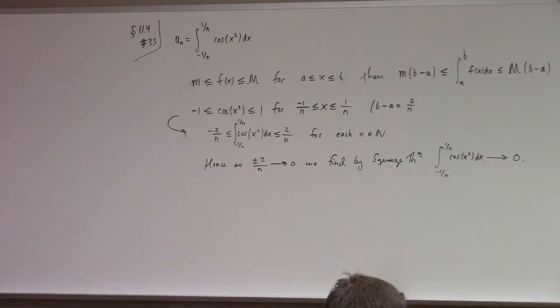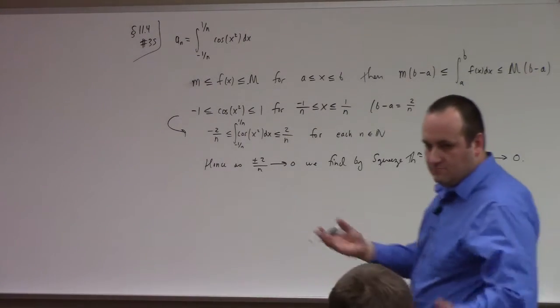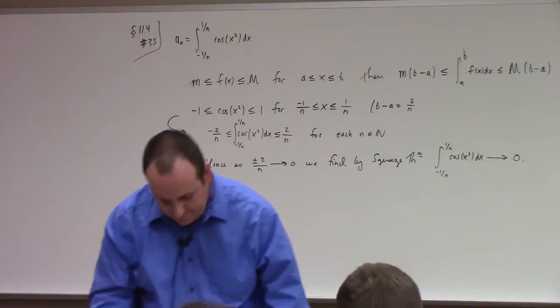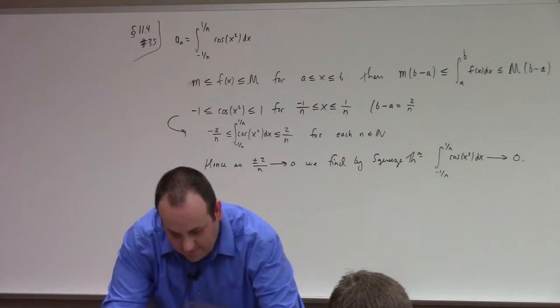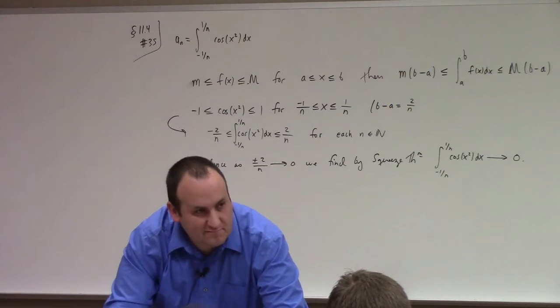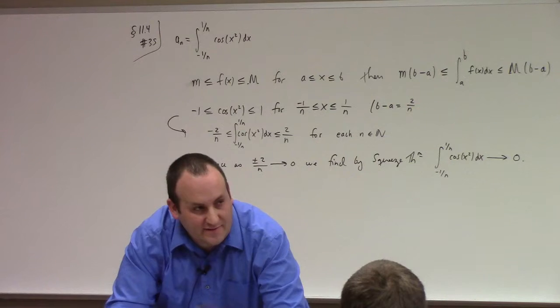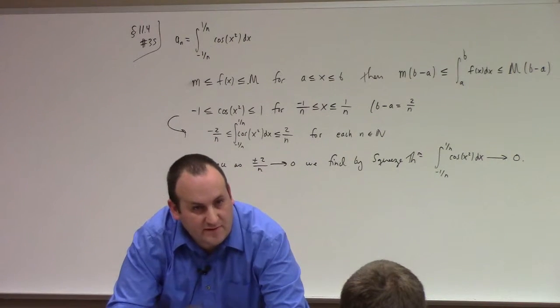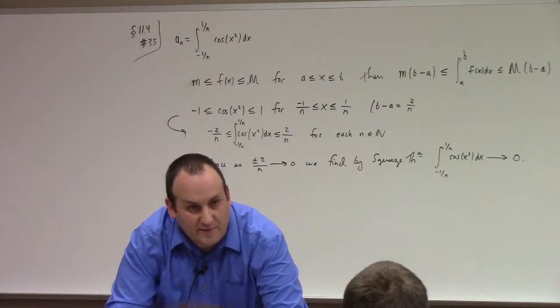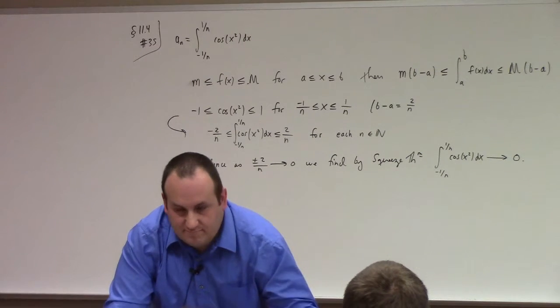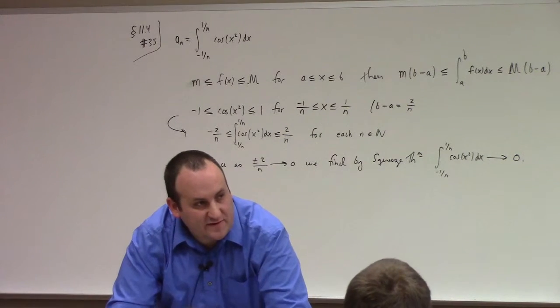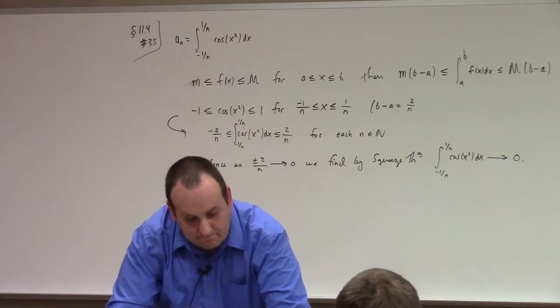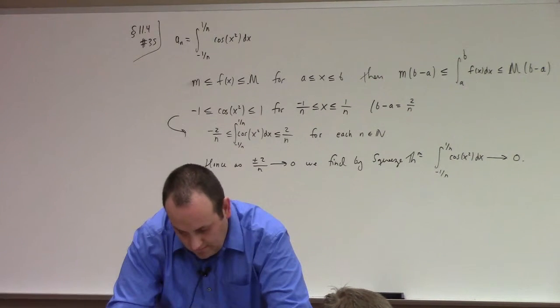So I get minus 2 over n less than or equal to the integral of cosine of x squared less than or equal to 2 over n, right? For each n in the natural numbers. So then I can show that... I'm sorry. Idiot. Not you, me. Minus 1 over n to 1 over n, right? That's the punchline of the theorem there. Hence, by squeeze. Is that...